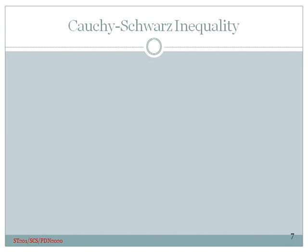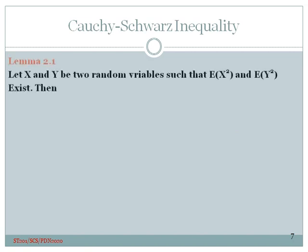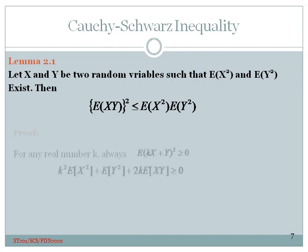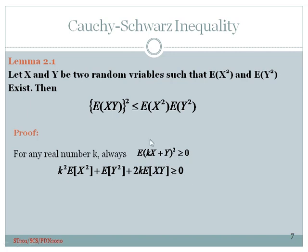Here is an application of the correlation coefficient: the Cauchy-Schwarz inequality. Let x and y be two random variables such that E[x²] and E[y²] exist. Then the inequality states that (E[xy])² is always less than or equal to E[x²] times E[y²]. For the proof, for any real number k, the expected value of (kx + y)² is always non-negative, since it is a squared term, so this expression is always greater than or equal to zero.